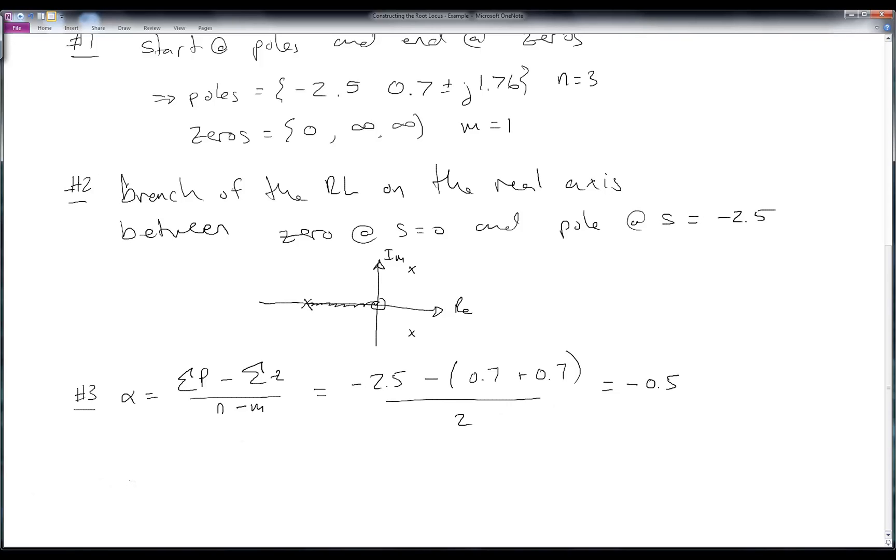Rule 3 also tells us that we can calculate the angle of the asymptotes by looking at 180 degrees plus 360 degrees times L minus 1 all over 2, and L here is going to go from 1 to 2, where L equals N minus M. When L is 1, I get 1 at 90 degrees, and when L is 2, I get 1 at 270 degrees. Going back to my root locus, at minus 0.5, that's alpha, there's going to be an asymptote that departs at 90 degrees there and 270 degrees there.